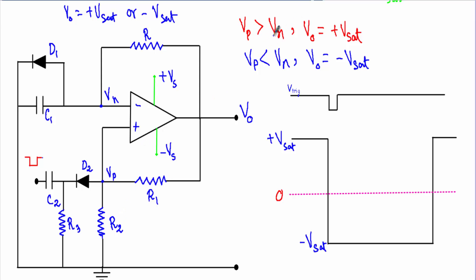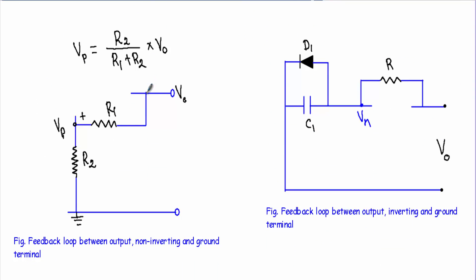When VP is greater than VN, the output voltage will be plus Vsat, and when VP is less than VN the output voltage will be minus Vsat. This output voltage has two feedback loops: one at the inverting terminal and one at the non-inverting terminal. The output forms a voltage divider network through R1 and R2, and the voltage dropped across the non-inverting terminal to ground is VP, where VP equals R2 divided by (R1 plus R2) multiplied by VO.